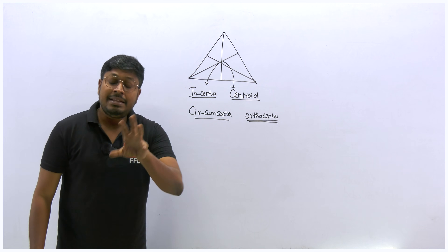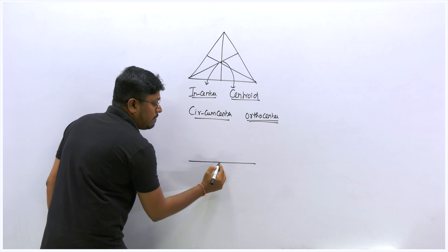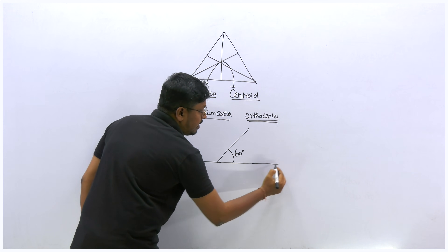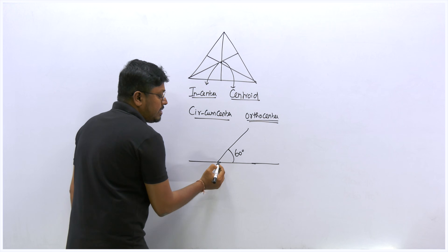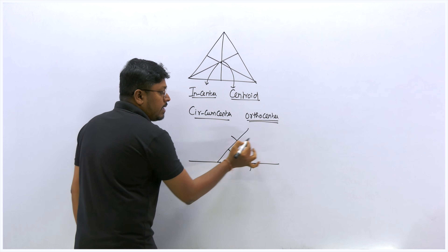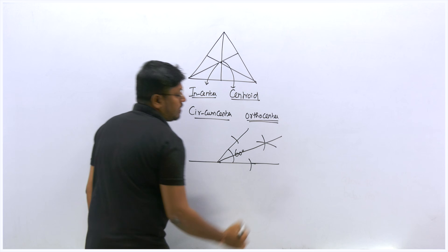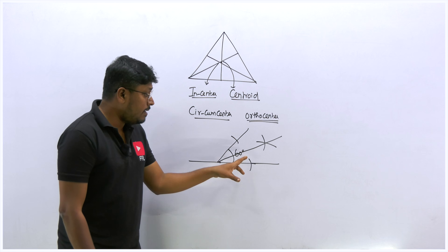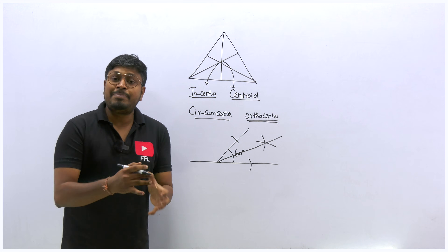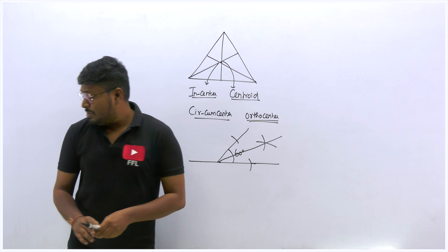In school, students use a geometry box to construct these centers. For example, to draw the incenter they use a protractor to mark an angle like 60 degrees, then use a compass set to 5 centimeters to draw arcs and find the angle bisector. They draw all three angle bisectors using compass and protractor to find the joining point called the incenter. But since we are preparing for competitive exams, all those construction steps are not needed.